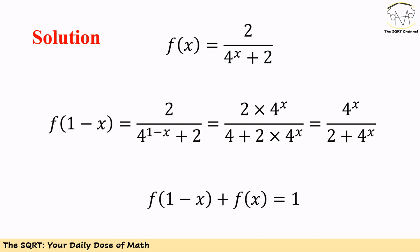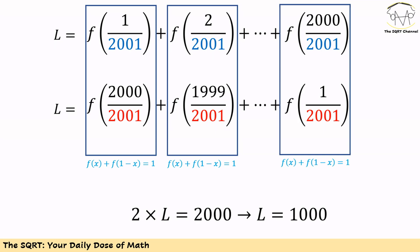Now take a look at f of x and f of 1 minus x. If you add them together you will get exactly 1. This means we can write the sum we need to calculate in two different ways: f of 1 over 2001 up to f of 2000 over 2001, or in reverse order. Combined with the fact that f of x plus f of 1 minus x equals 1, adding the first two terms gives 1, the second two terms gives 1, and so on.